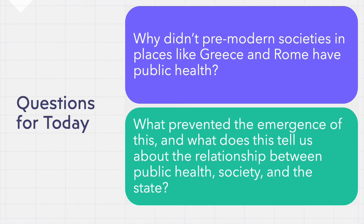But, according to historians, the story of public health is one that began only in the early modern period, specifically as a reaction to the bubonic plague and syphilis outbreaks of the 15th, 16th, and 17th centuries. Prior to this, there was no public health. In some of the world's earliest civilizations, including those of the ancient Mediterranean, the idea that the state should be responsible for the well-being of the population was completely anathema, as was the notion that political authorities should undertake measures designed to slow the spread of epidemics. It appears something other than the presence of mass illness was required to stimulate the development of public health. So, why was this? Why didn't pre-modern societies in places like Greece and Rome have public health? What prevented the emergence of this, and what does this tell us about the relationship between public health, society, and the state?